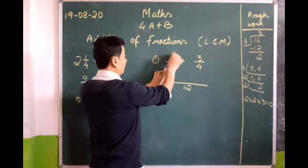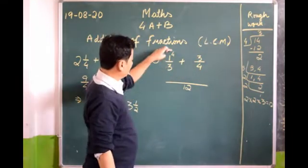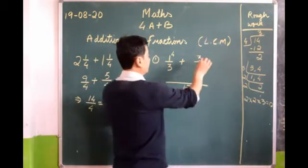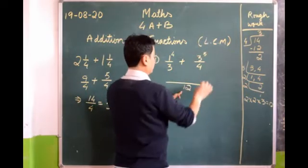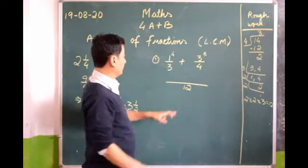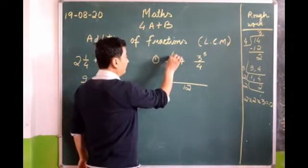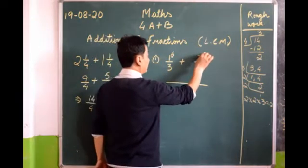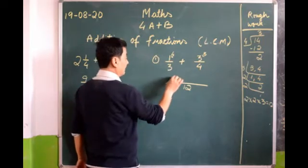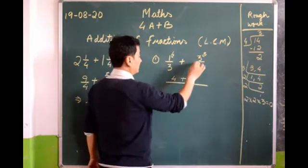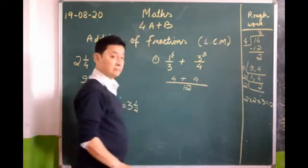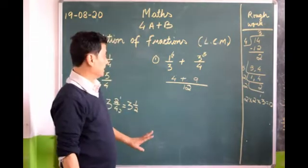3 fours are 12. 4 goes into 12 three times — 4 threes are 12. Now we have to multiply the numerator with this number: 1 times 4 is 4, plus 3 threes are 9. So we have 4/12 plus 9/12. Got it? Let's do that again so it is clear.